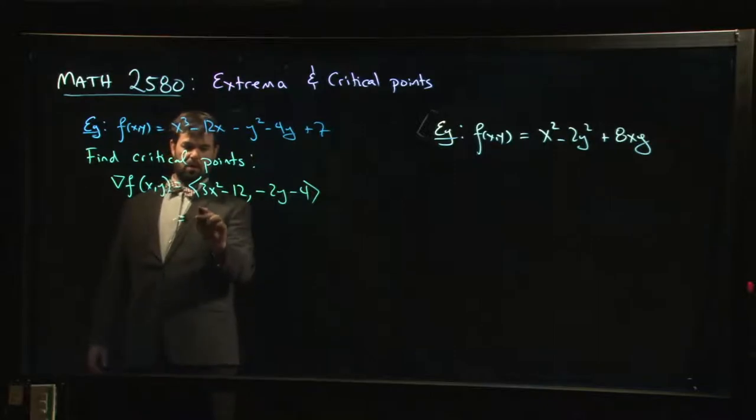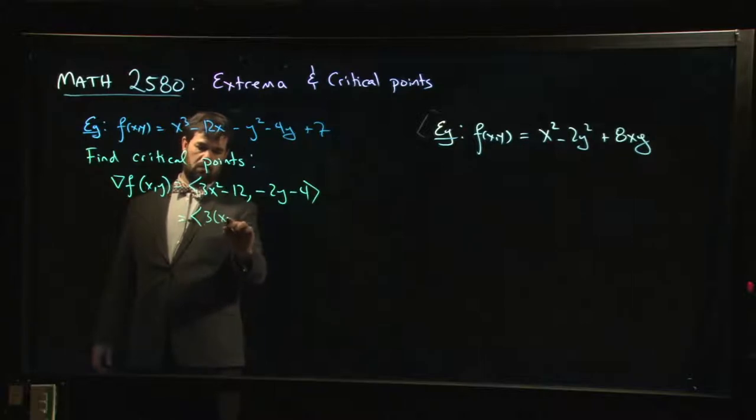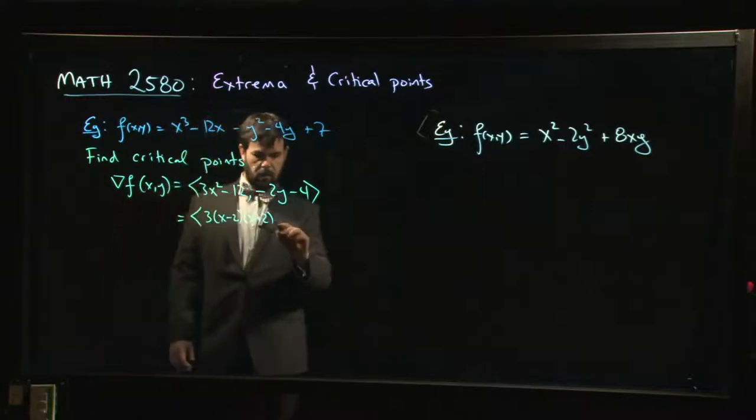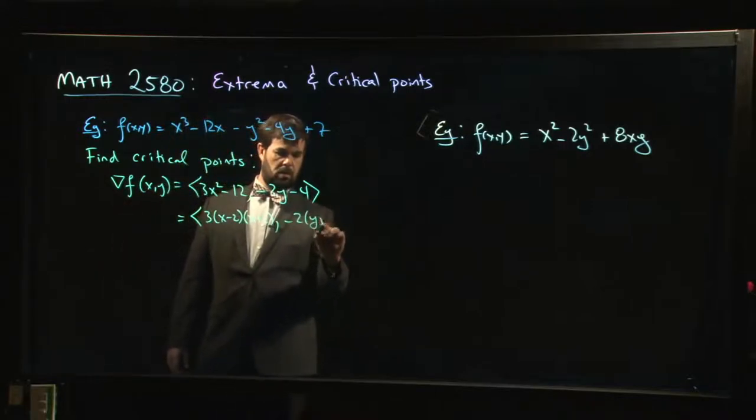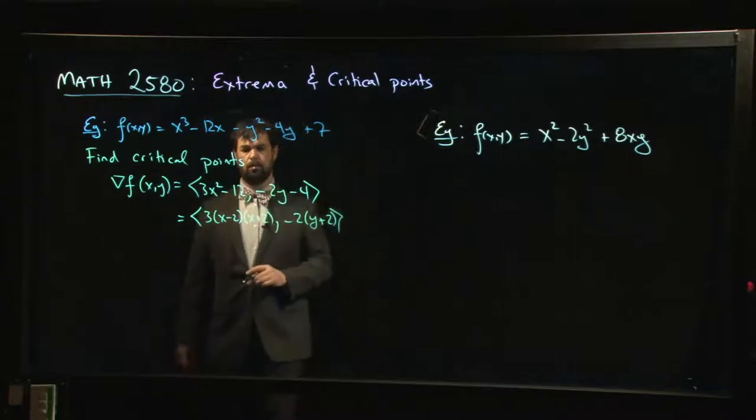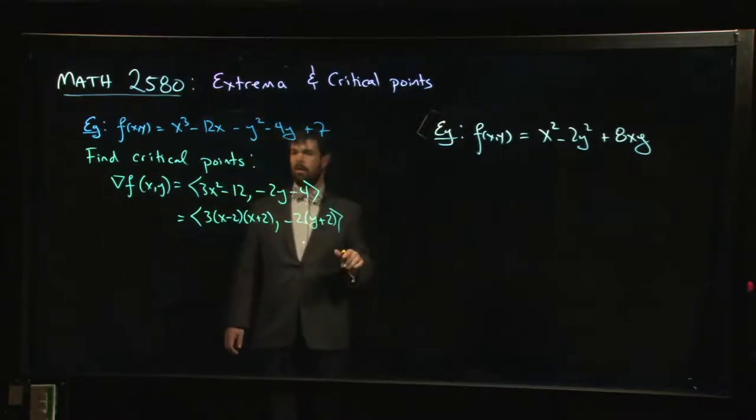And I'm going to do a little bit more work here. I'm going to factor. If I pull the 3 out from the first component I'm left with x² - 4, which factors as the difference of squares. Here if I take out a -2, I'm left with y + 2.